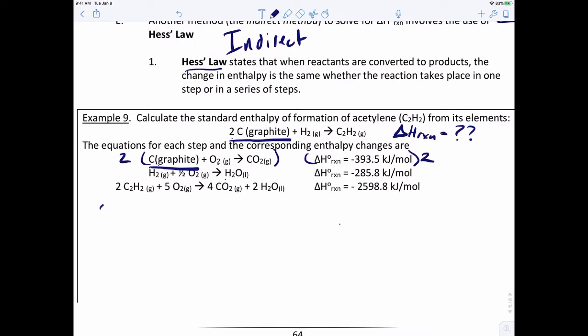So let me rewrite this equation. We got two moles of carbon graphite plus two moles of O2 yields two moles of CO2. And then the enthalpy for that reaction is going to be negative 393.5 times two, which is negative 787 kilojoules per mole.